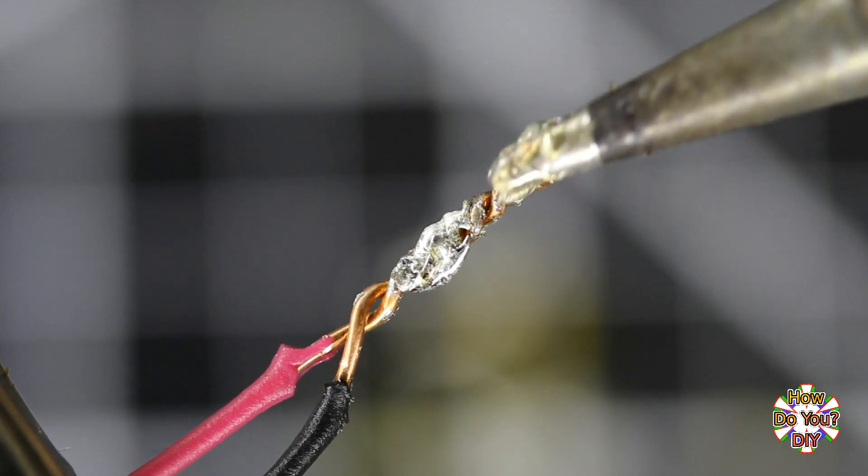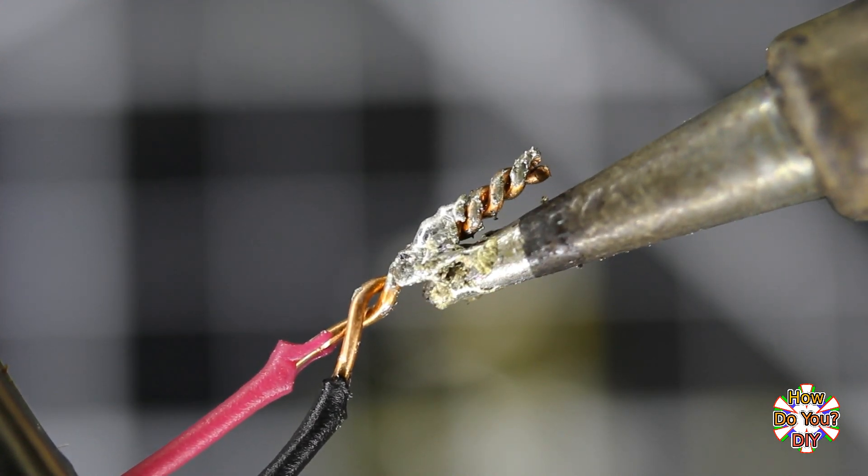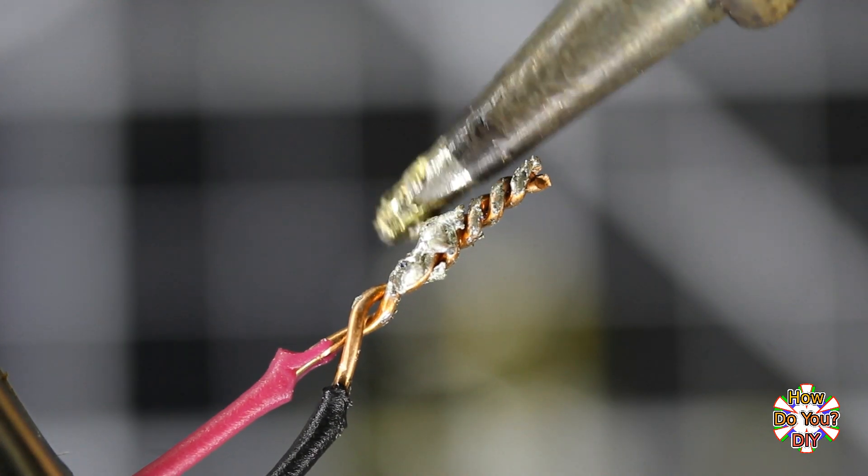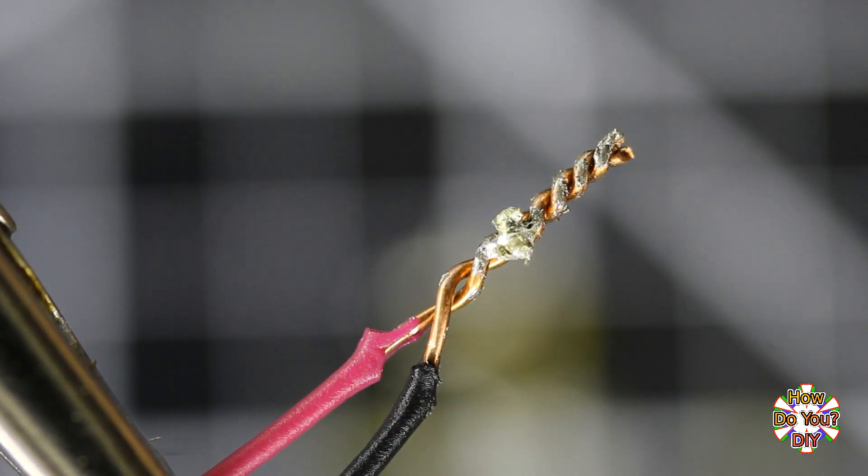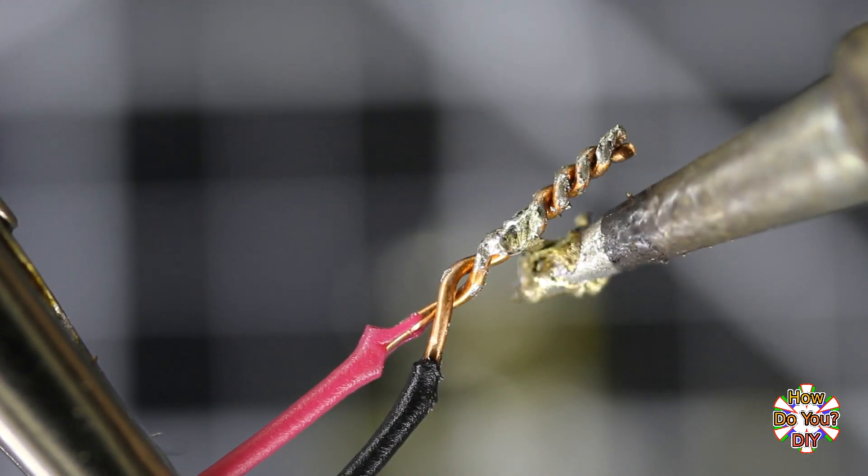Flux is used to remove the oxide layer from the copper and from the solder. The way it does this is kind of interesting. It doesn't do much at low temperatures, but when it heats up and gets near the temperature of melted solder, it becomes corrosive and gets rid of the oxide layer.